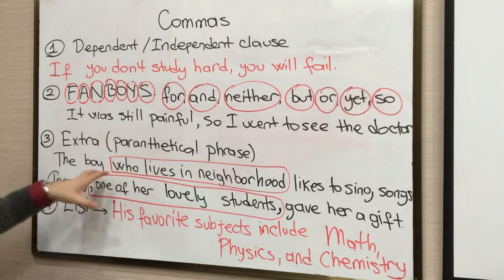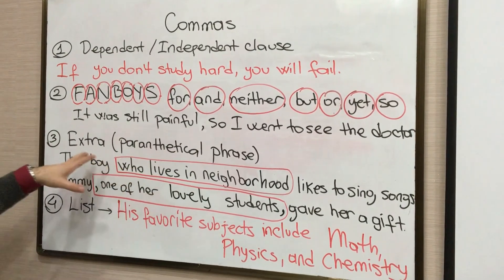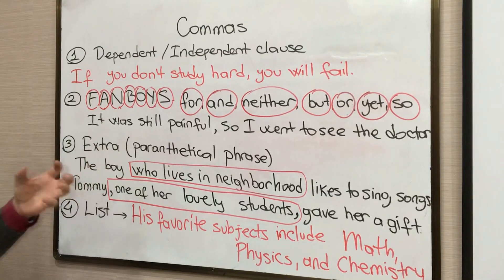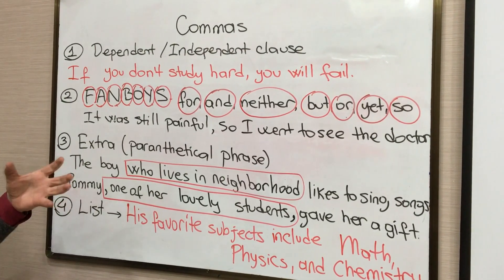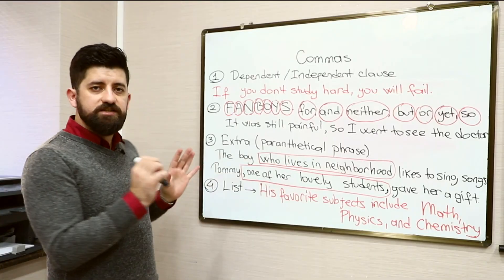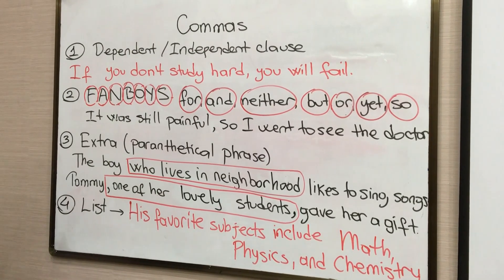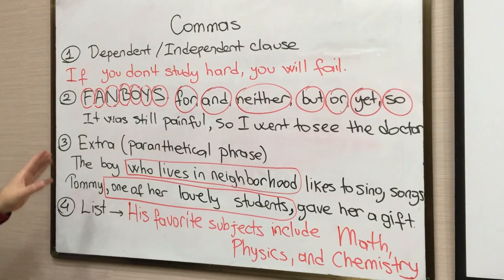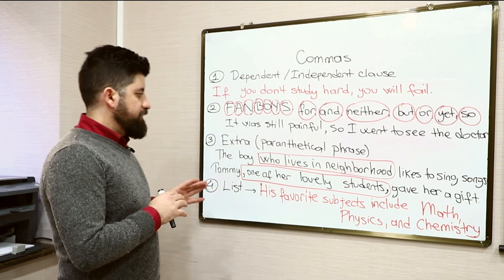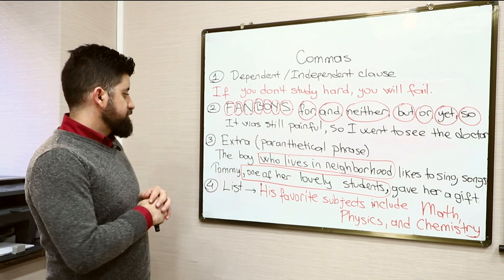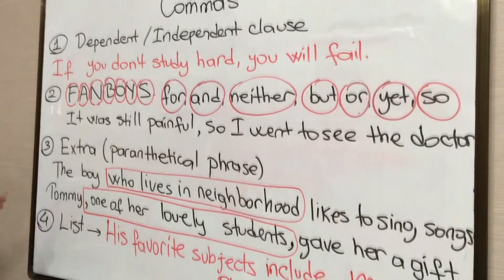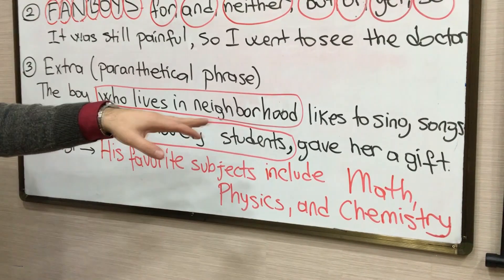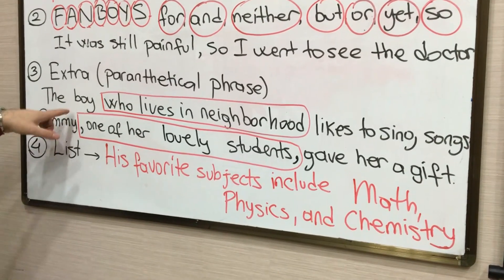If it's not extra, you must not put commas. I recommend one method: try removing that part. If the structure of the sentence is preserved and it still makes sense, then it is not a parenthetical phrase and you don't need to put commas there. But if you remove the part and the meaning of the sentence doesn't change, it means it is a parenthetical phrase and you must put commas. For example, I can read the second sentence as: 'Tommy gave her a gift' — the sentence is understood without that phrase.